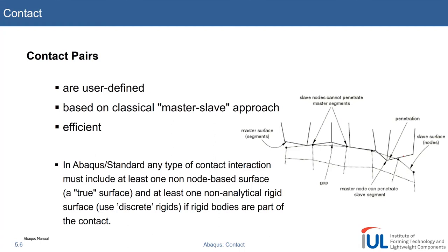This might lead to some weird errors, and we'll talk about the approach to how to define master-slaves in a minute. As a general remark, any type of contact interaction must include one non-node-based surface. As you might remember from some of the contact definitions we already did, we could often choose between surface and node-based set.